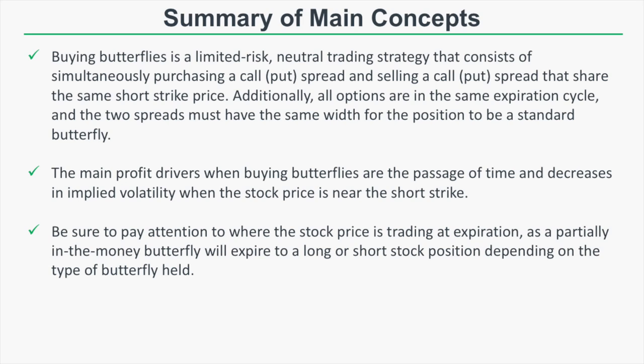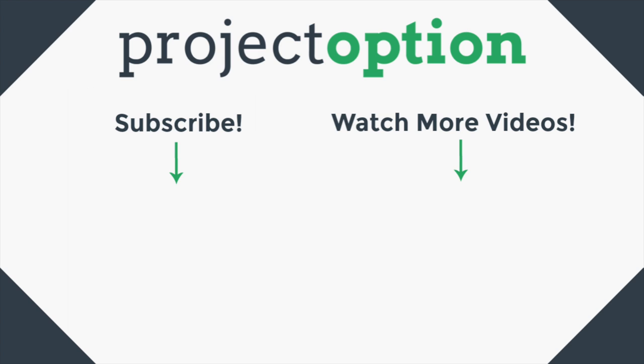Let's wrap up with a summary. Buying butterflies is a limited-risk neutral trading strategy consisting of simultaneously purchasing a call or put spread while selling a call or put spread that share the same short strike price. All options are in the same expiration cycle, and both spreads must have the same width for a standard butterfly. The main profit drivers are the passage of time and decreases in implied volatility when the stock price is near the short strike. Be sure to pay attention to where the stock is at expiration, as a partially in-the-money butterfly will expire to a long or short stock position depending on the butterfly type.